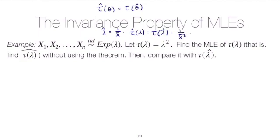The goal of this exercise is to compare actually finding the MLE of lambda squared by maximizing the likelihood function directly, and then compare that to the invariance property result. It's a particular case that we'll look at to show the theorem works. In class we proved it for every case, but it's always a good idea to go through one or two specific cases.